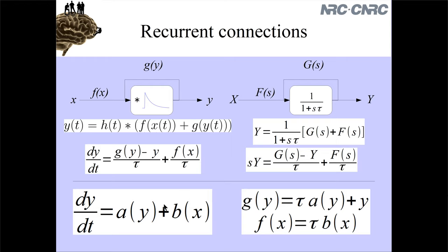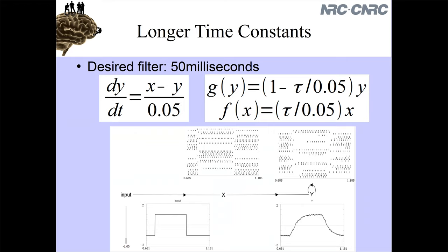This is a new capability for neural networks - instead of just having neurons approximate functions, I can now have neurons approximate differential equations - any differential equation I want. The same restrictions apply in that if the differential equation has really sharp changes in it, the neurons are only going to approximate them, and you might end up with smoother versions. But as long as it's a smooth differential equation, everything should be fine.